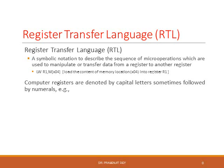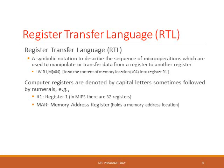Here there are various examples. R1 means register 1. Following the MIPS architecture, there exist 32 registers, denoted from R0 to R31. MAR is a special type of register called the memory address register, sometimes also referred to as address register AR. It holds the memory address location.